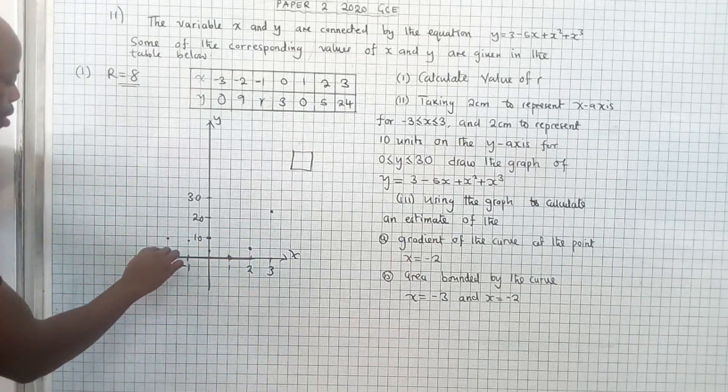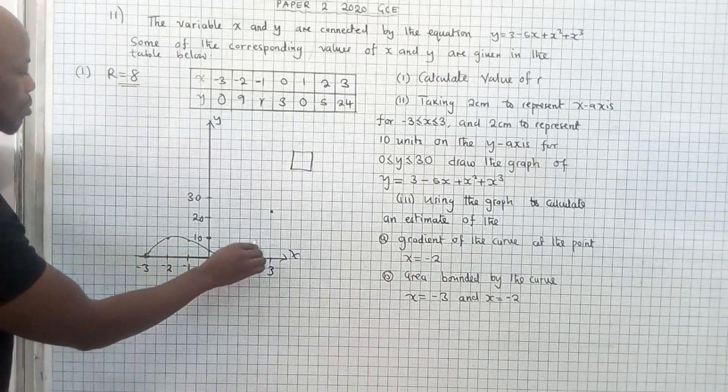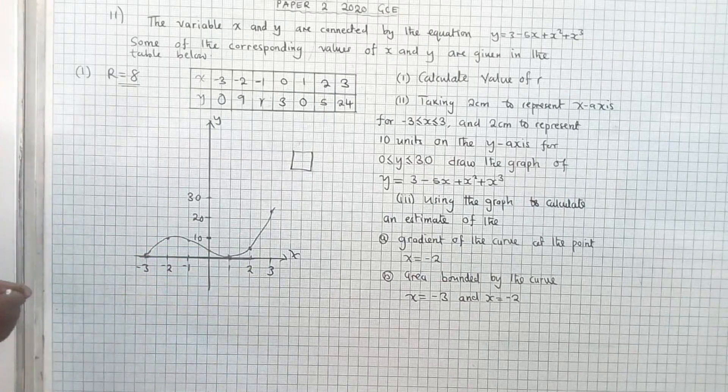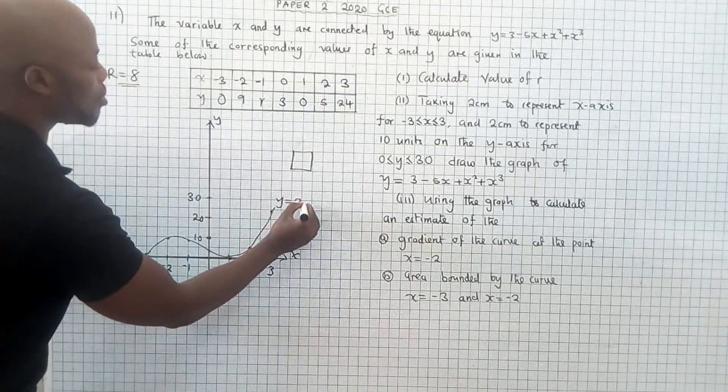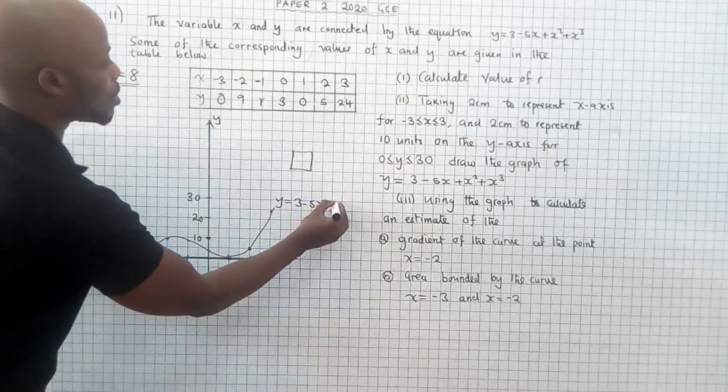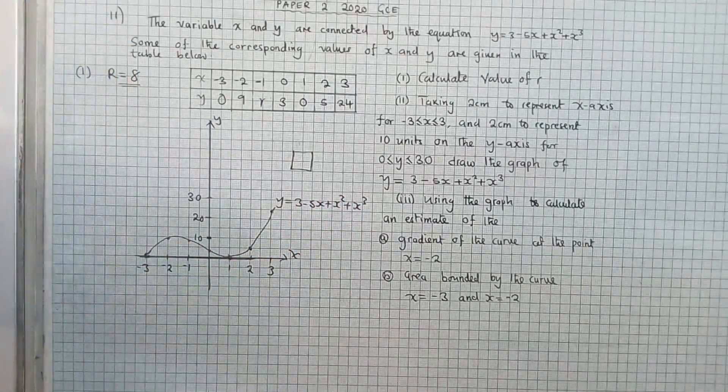Now we can join our points. Our points. This is it, our graph. We even write y is equal to 3 minus 5x plus x squared plus x cubed. So we're done with the graph.